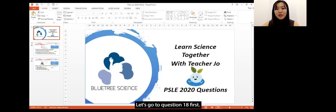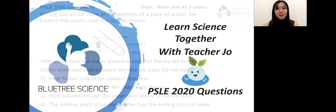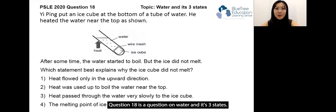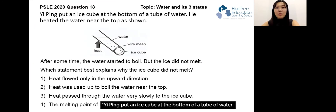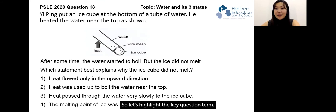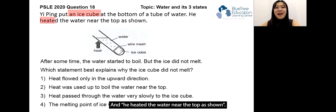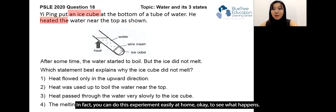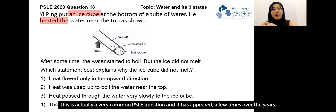Let's go to question 18 first. Question 18 is a question on water and its three states. Yi Ping put an ice cube at the bottom of a tube of water and heated the water near the top as shown. Let's highlight the key information: an ice cube, and he heated the water near the top as shown. You can actually do this experiment easily at home. This is a very common PSLE question and has appeared a few times over the years.